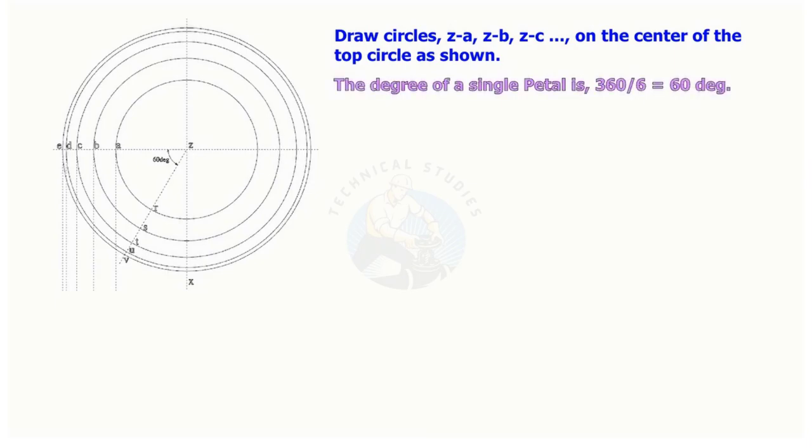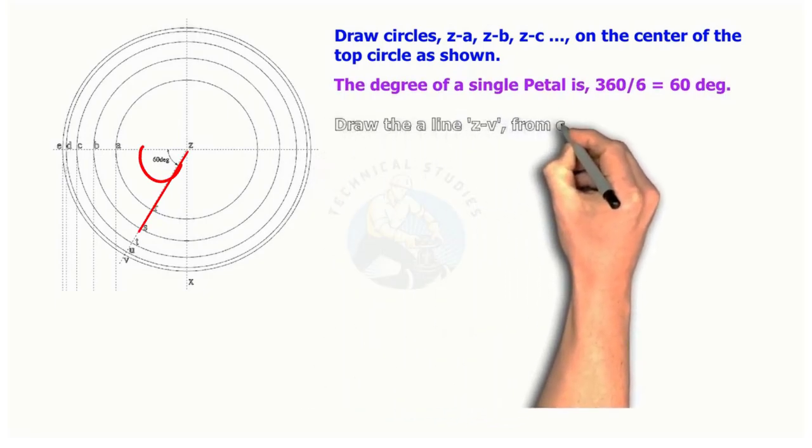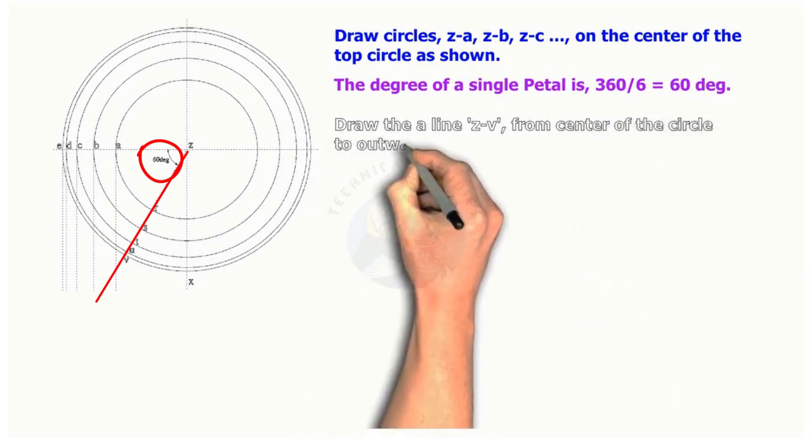Since the number of petals are 6, divide 360 degrees by 6. Draw a line, ZV. The including angle shall be 60 degrees.